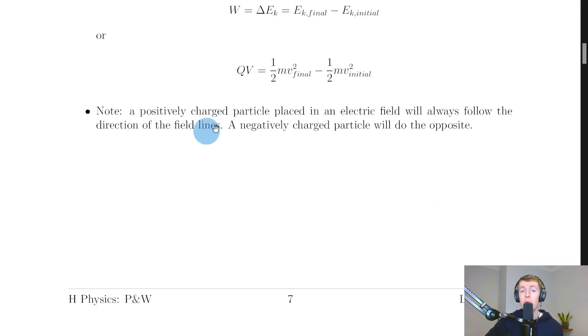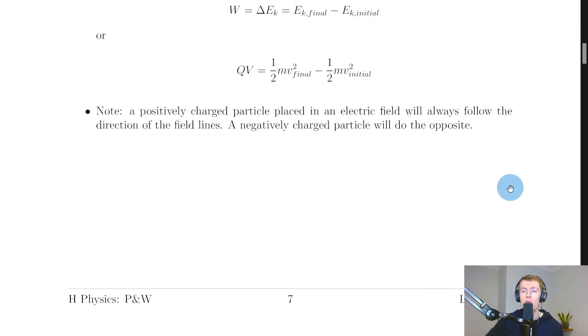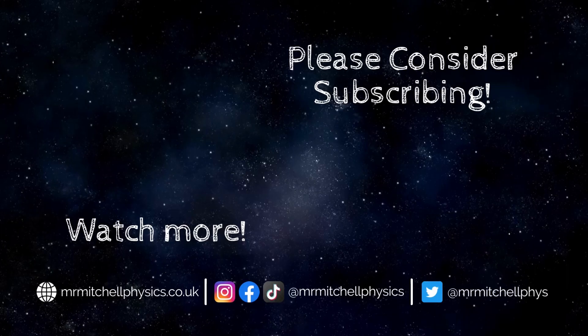To note: a positively charged particle placed in an electric field will always follow the direction of the field lines, while a negatively charged particle will do the opposite. That's all for this video, folks. Thanks for watching — if you made it to the end, please like, subscribe to the channel, and I'll see you in the next one. Take care.